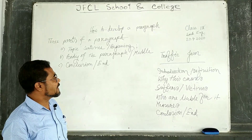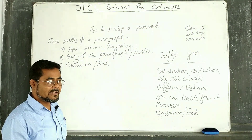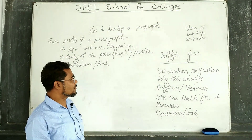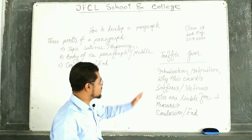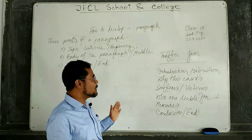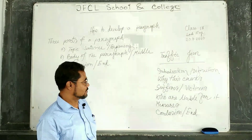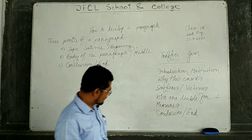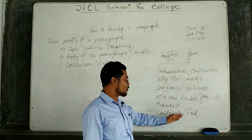Today I have taken the paragraph 'Traffic Jam' as an example. For developing this paragraph, first you have to cite some points: you have to take an introduction or definition, then why this problem causes, who are sufferers or victims of it, who are liable for it, next the measures, and at last the conclusion or end.